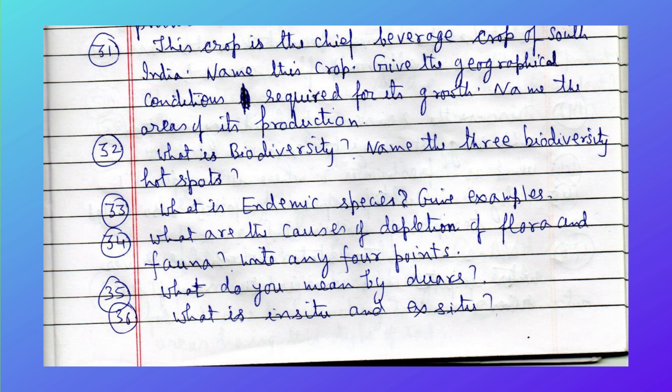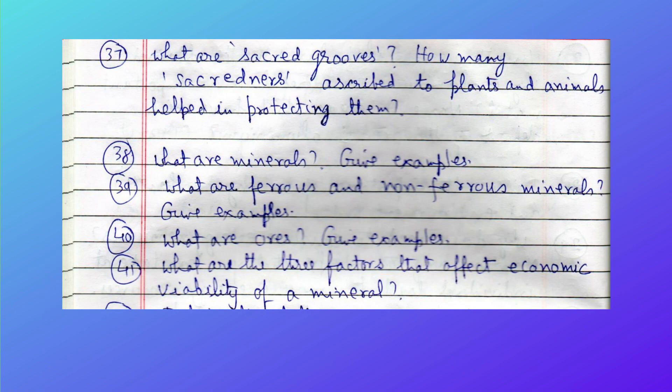What is biodiversity? Name the three biodiversity hotspots. What is an endemic species — give examples. What are the causes of depletion of flora and fauna — write any four points. What do you mean by Deoras? What is in-situ and ex-situ conservation? What are sacred groves and how do they help in protecting plants and animals?